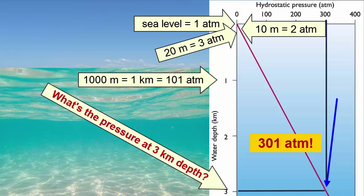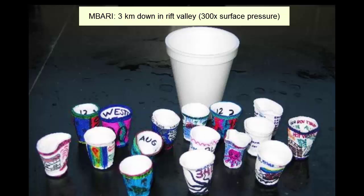What happens to objects that descend that deep? They get compressed — really compressed. These styrofoam cups were sent 3 kilometers down in the oceans in a submersible, where they were exposed to the pressures of the seawater by a robotic arm on the submersible. The air in the styrofoam compressed under that pressure, and the cups shrank, as you can see here.